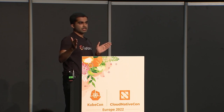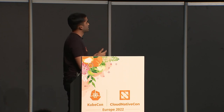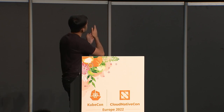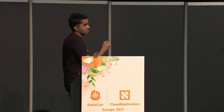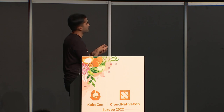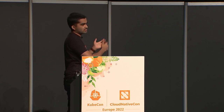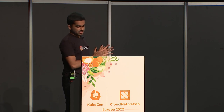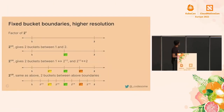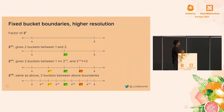If you want lower resolution — a bigger gap between consecutive bucket boundaries — you take the factor as 2^2, giving boundaries 1, 4, 16, 64, and so on. You can use 2^4 or 2^8 as well. The powers must themselves be powers of 2; you cannot use 2^3 or 2^5. If you want higher resolution, the factors go in the other direction: 2, then 2^(1/2) which is square root of 2, then 2^(1/4) which is the square root of that, and so on.